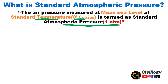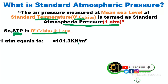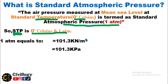So 1 atm is the air pressure measured at mean sea level at zero degrees Celsius. You must have heard about STP — standard temperature and pressure — at which different practicals and experiments are carried out. STP is zero degrees Celsius and 1 atm. Standard atmospheric pressure or 1 atm equals 101.3 kilonewton per square meter, or 101.3 kilopascal, since 1 Newton per square meter equals 1 Pascal.